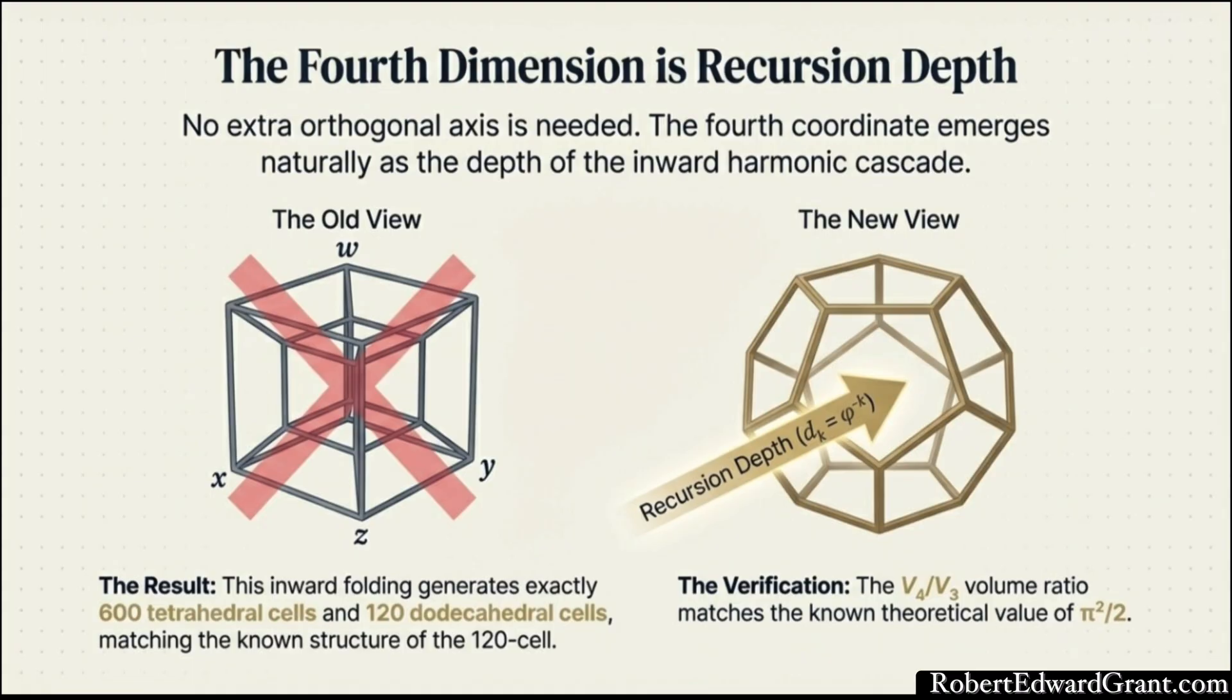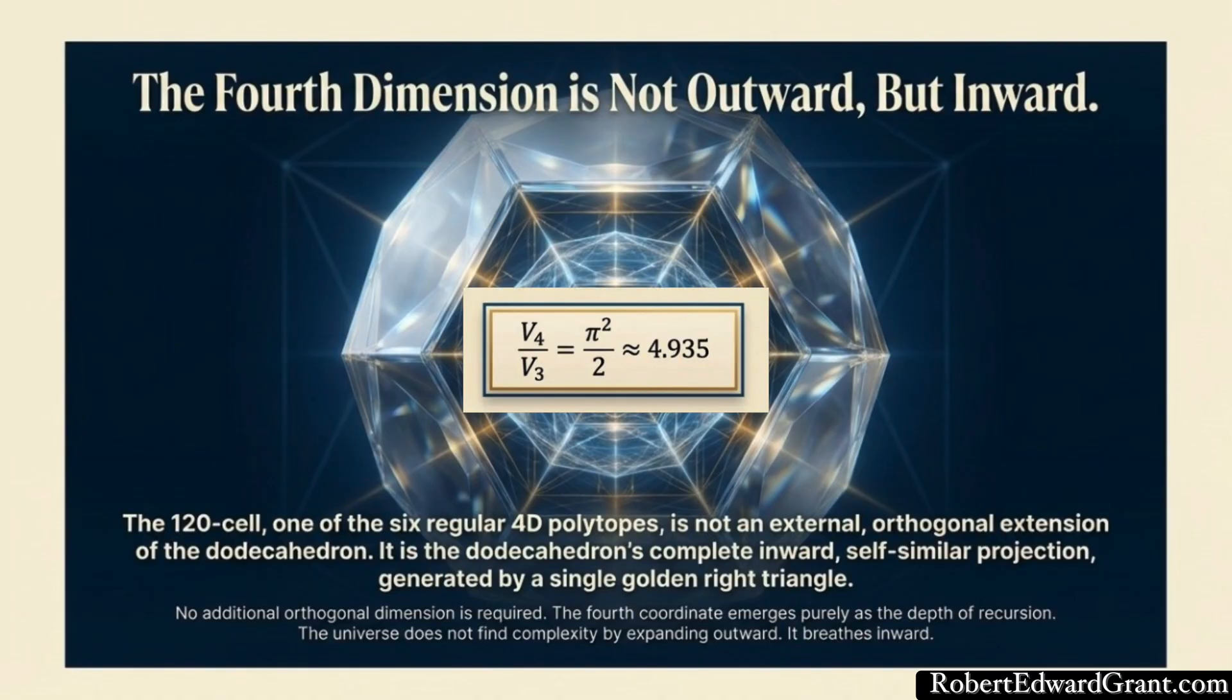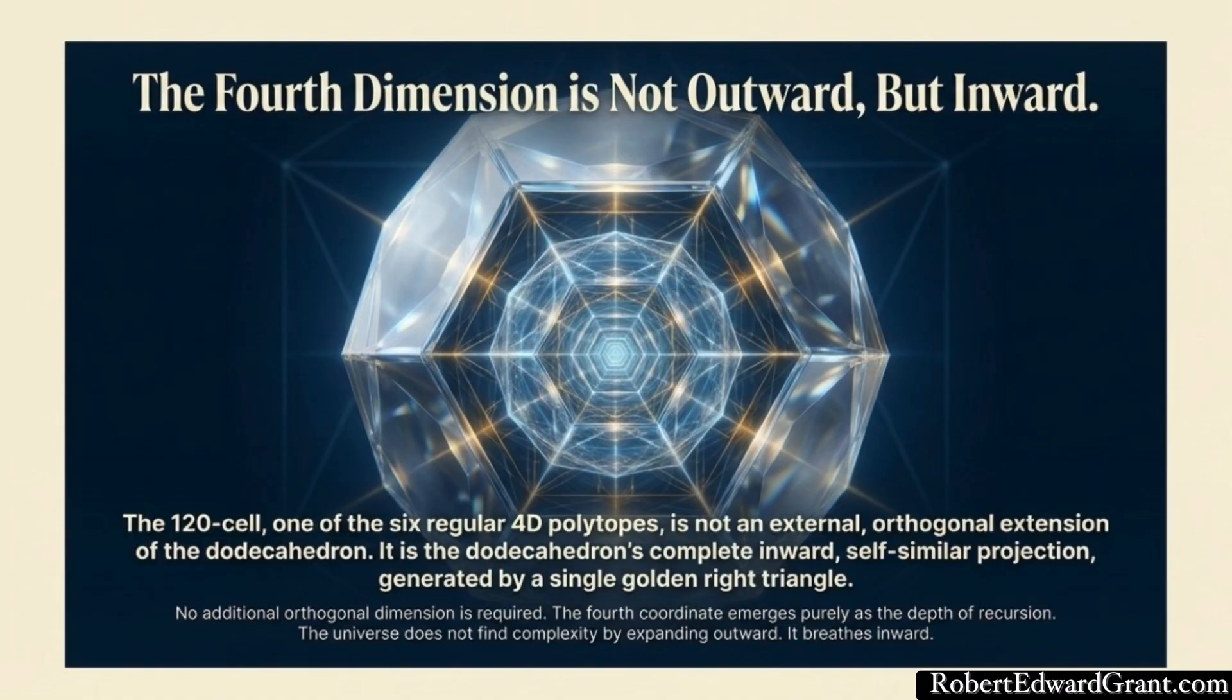So the fourth dimension isn't an external axis. It emerges as the depth of recursion, how far into itself the shape is folded. This inward cascade is mathematically shown to generate exactly 120 nested dodecahedral cells and 600 tetrahedral cells, which perfectly matches the known structure of the 120-cell. And this internal self-similar process yields the established ratio between the 4D volume of the 120-cell and the 3D volume of the dodecahedron, pi squared over 2, about 4.935. The conclusion is beautiful. It says the 120-cell is the memory of the dodecahedron looking inside itself.